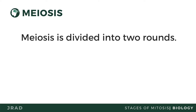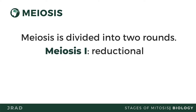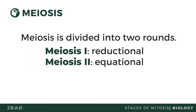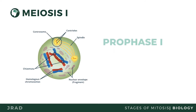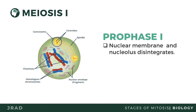Like mitosis, meiosis begins in interphase and later undergoes all the different stages of cell division. However, in meiosis the parent cell divides two consecutive times: meiosis 1, which is reductional division, and meiosis 2, which is equational in nature. In prophase 1, the nuclear membrane and the nuclei start to disappear.